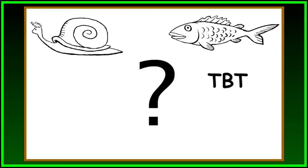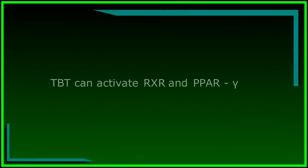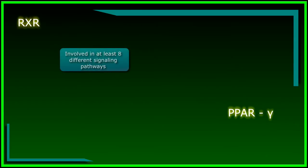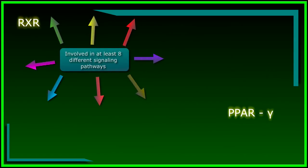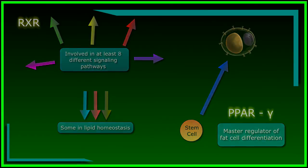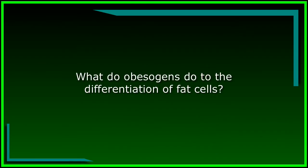But how does all this work? We asked the question, which hormone receptors could TBT be activating to cause imposex? We found that TBT was doing something we didn't expect — it was activating RXR and PPAR gamma. As we explored in the last module, RXR plays large roles in lipid homeostasis in partnership with PPAR gamma. This RXR-PPAR gamma complex is the master regulator for fat cell differentiation, and either partner can be activated. So you have to ask, do EDCs that activate RXR or PPAR gamma affect the differentiation of fat cells leading to obesity?